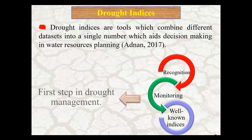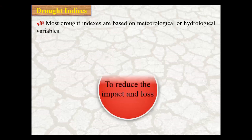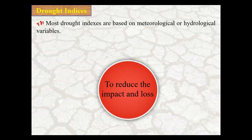Recognition and monitoring of well-known indices are considered the first step in drought management, so we should consider this topic in drought management and monitoring. Most drought indices are based on hydrological and meteorological variables, and it is necessary to obtain different information on the occurrence, scope, intensity, duration, and impact of drought in real time.